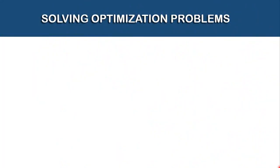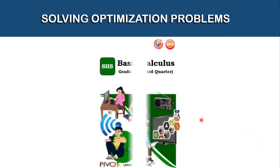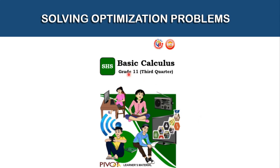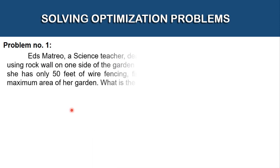For this video we're going to be solving optimization problems. All problems included in this video are from the Basic Calculus Grade 11 Third Quarter PIVOT for CALABARZON Learners Material, from page 48 to 49. Let's have our problem number one.